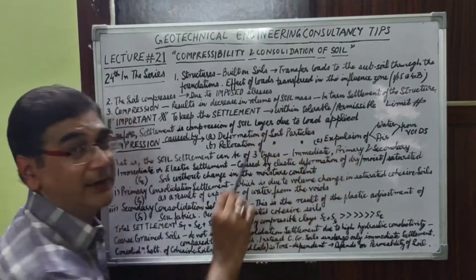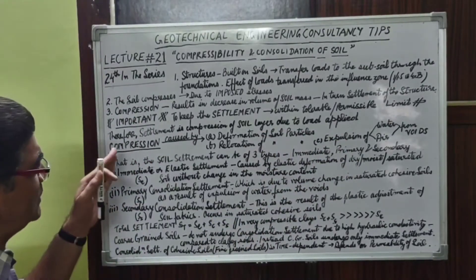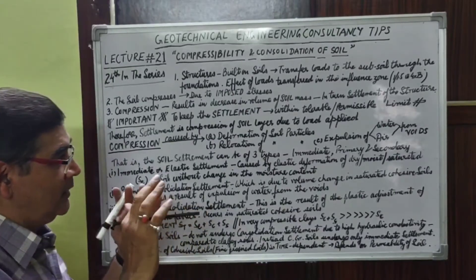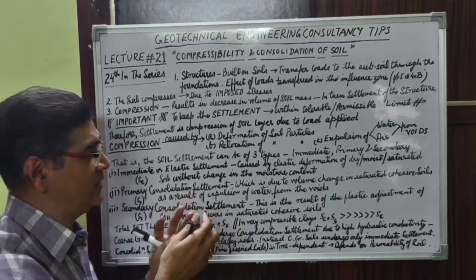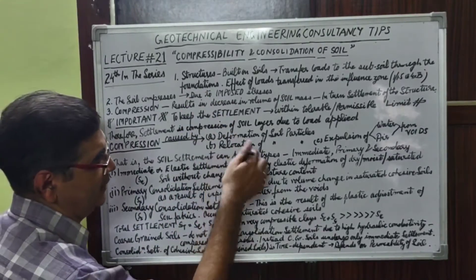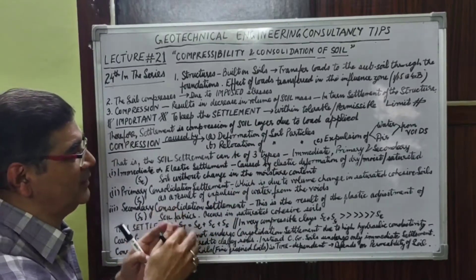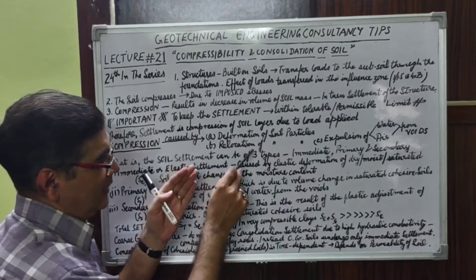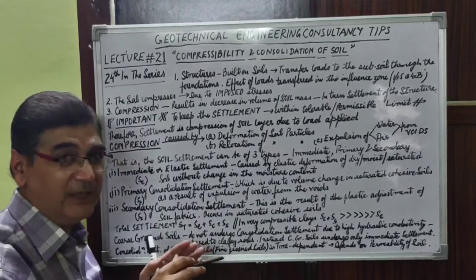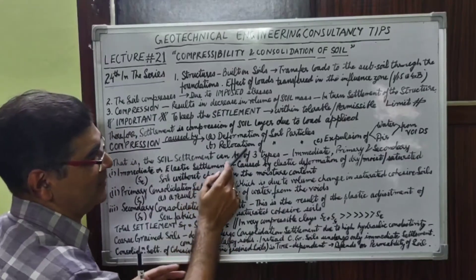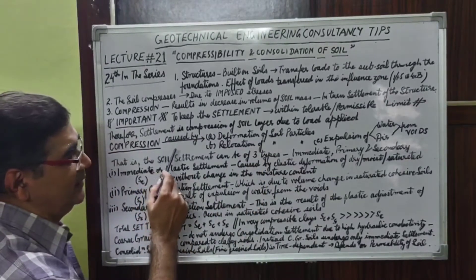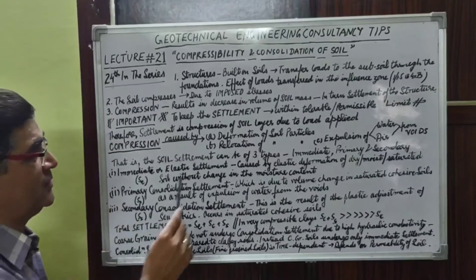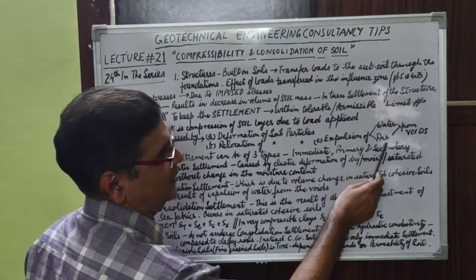Settlement is the compression of the soil layer due to applied load. This compression is caused by: first, deformation of soil particles — the soil particles deform in their configuration because of the superimposed load; second, relocation of the soil particles — when load is applied through the foundations, air and water in the voids is expelled out; and third, the expulsion of water and air from the voids. In summary, compression is caused by deformation or relocation of soil particles, or by expulsion of water and air from its voids.